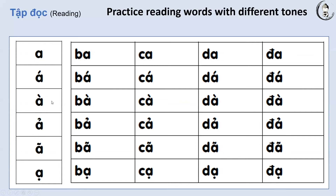Next, we have A with dấu huyền. This is a low tone, down tone. You start low and you stay low. À. Bà. Cà. Già. Đà.